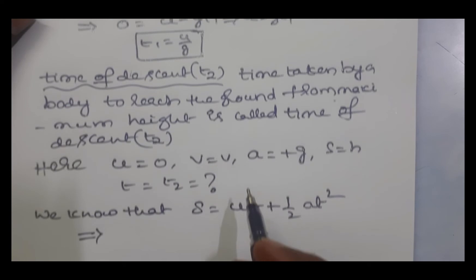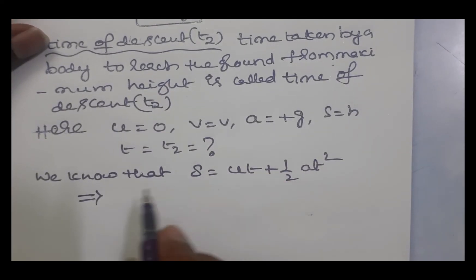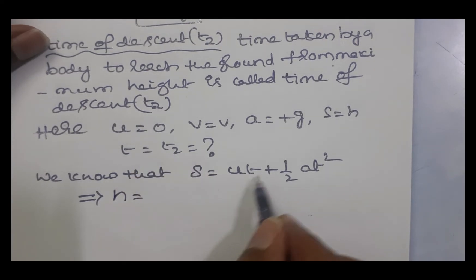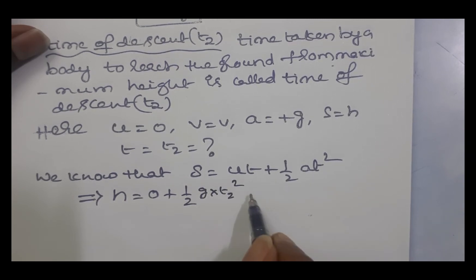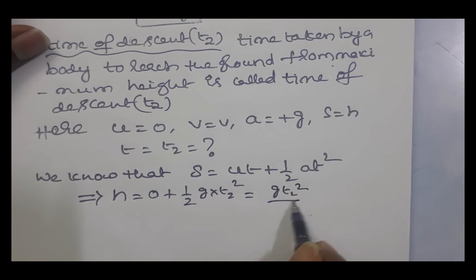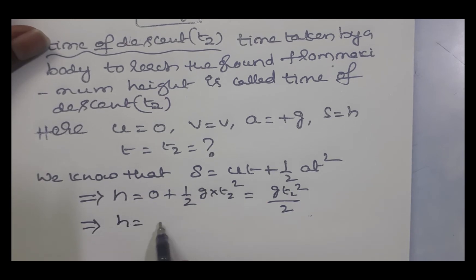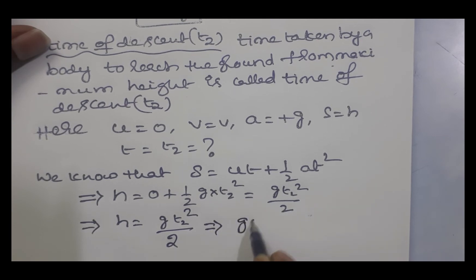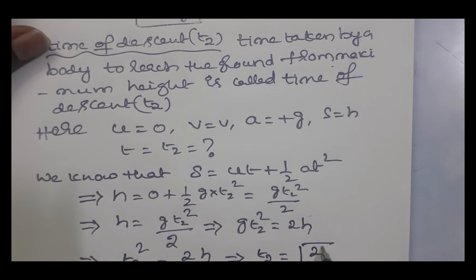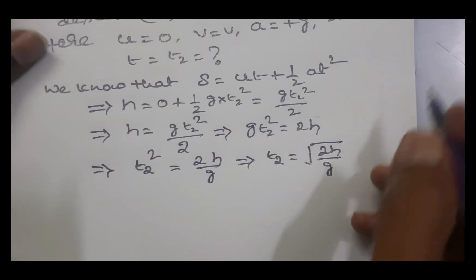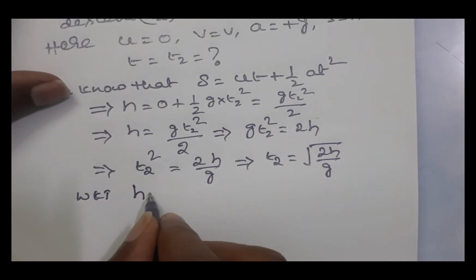To derive the formula for t2, we use s = ut + ½at². Here s = h, u = 0, a = g, and t = t2, so h = ½·g·t2². By cross multiplication, g·t2² = 2h, then t2² = 2h/g, and therefore t2 = √(2h/g).